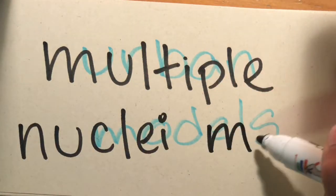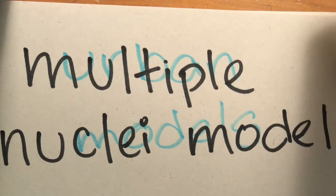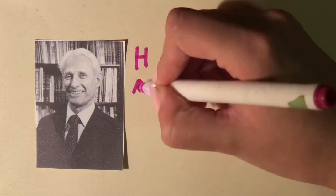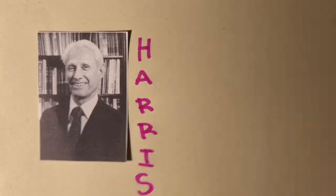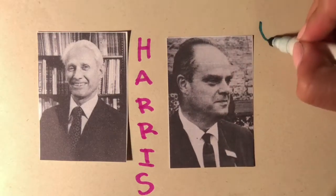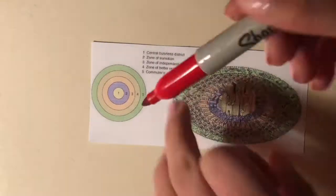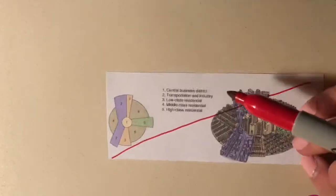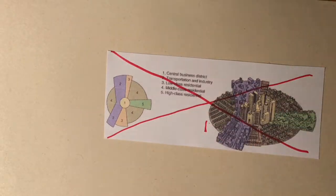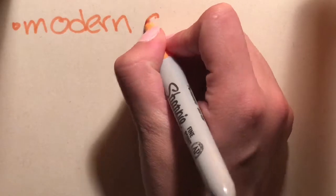The multiple-nuclear model is one of these. It was developed by Chauncey Harris and Edward Ullman. They both thought that neither the concentric zone model nor the sector model accurately depicted how a mid-20th century city was structured. This model describes the layout of a city and is based off Chicago.